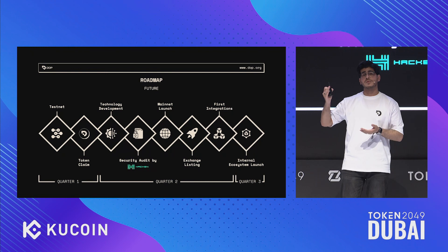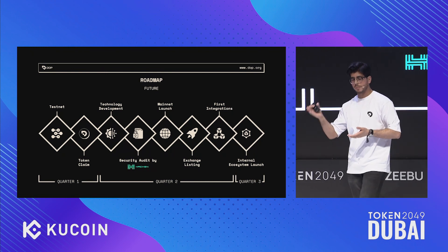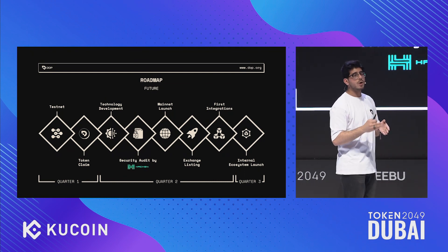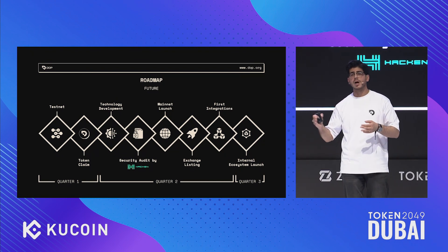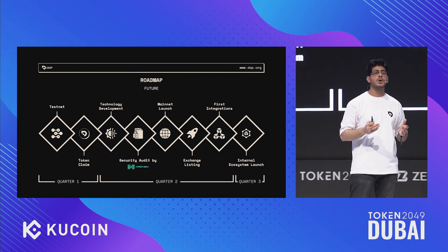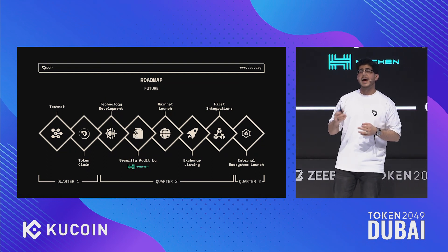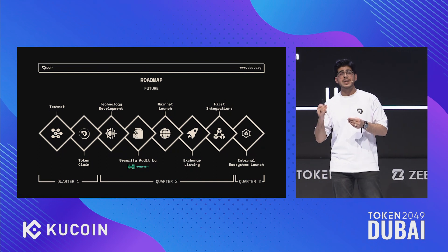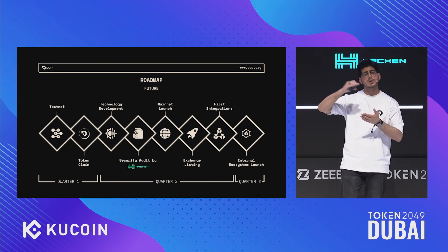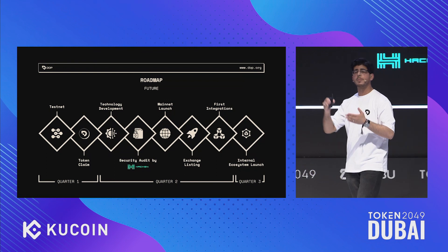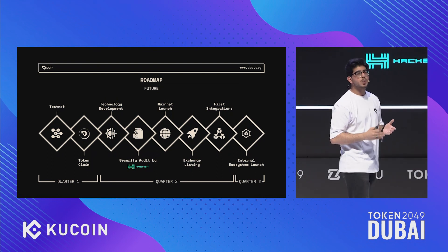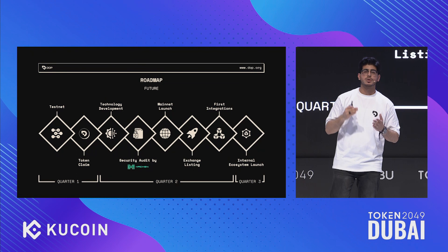Now discussing the future. These are the past accomplishments — where do we go from here? As our protocol and technology is under audit, we are hoping to launch the mainnet in the coming few weeks. Soon after that, we are launching the token on a Tier 1 exchange, making sure it's best for the community — the token is more liquid and more tradable. After that, we also want to have integrations with other protocols and wallets for ease of use, so people can use our protocol with other dApps and wallets. In Q3, we are planning to launch the internal ecosystem for end users.